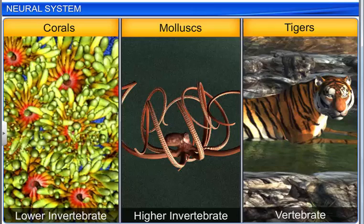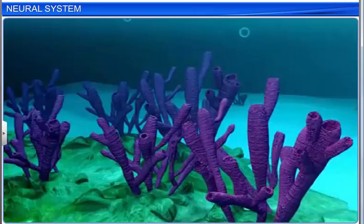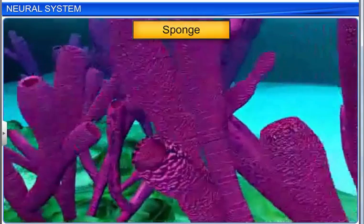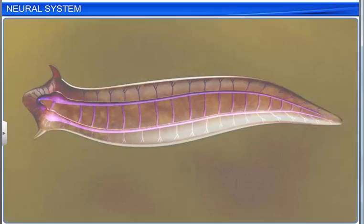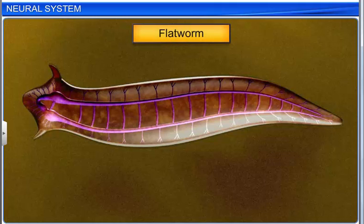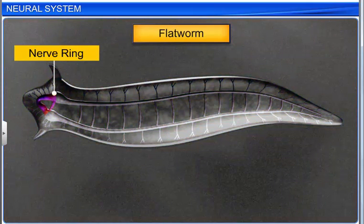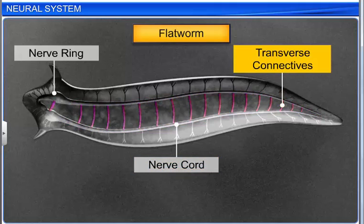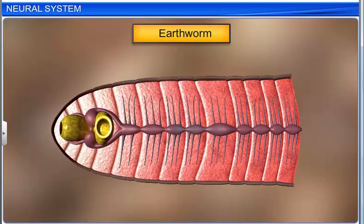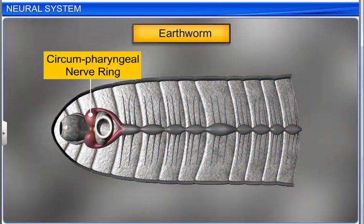Neural organization varies from lower invertebrates to vertebrates. The neural system of the hydra comprises a network of neurons. Flatworms have a ladder-type neural system, which is composed of nerve rings and nerve cords interconnected by transverse connectives. The neural system of earthworms consists of a circumfaryngeal nerve ring and a single, solid, ventral and ganglionated nerve cord.